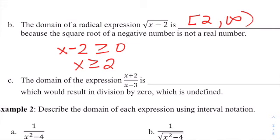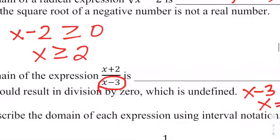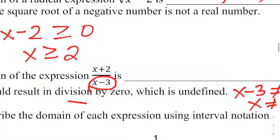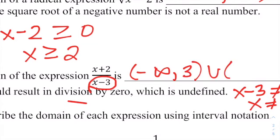The next one has a rational expression. Remember, we can never have a zero in the denominator, so X minus 3 cannot equal 0, meaning X cannot equal 3. In interval notation, that's all values less than 3 — negative infinity to 3, not including 3, with a parenthesis — and all values above 3.